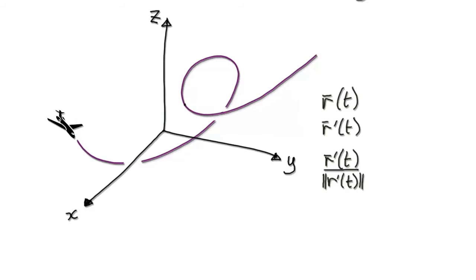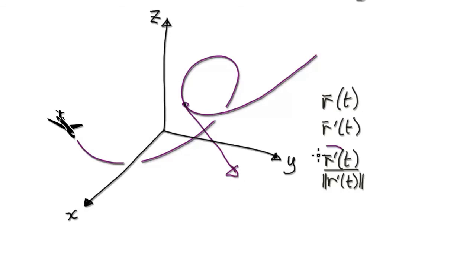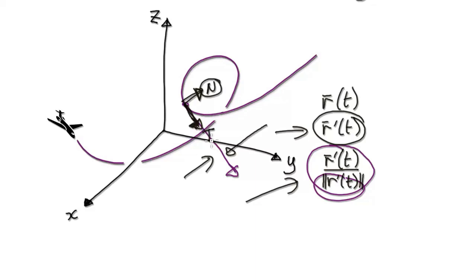Our next step is to understand why it is that when you differentiate the tangent vector itself, it won't give you the normal vector, but if you differentiate the unit tangent of length 1, then it will give you the normal vector. We need to understand why differentiating the unit tangent gives the normal, but differentiating the tangent alone won't work.